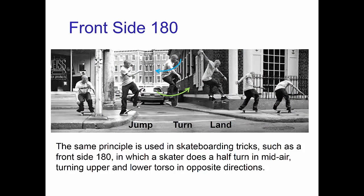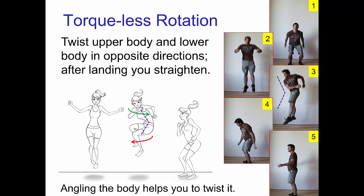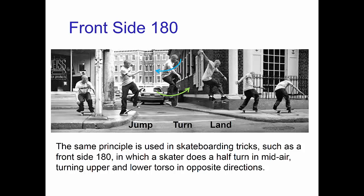The same principle is used in skateboarding tricks such as a front side 180, in which a skater does a half turn in mid-air. Notice that the skater turns the upper and lower body in opposite directions.